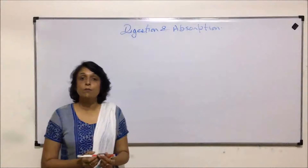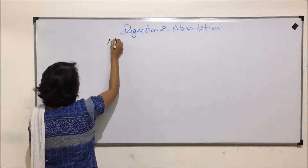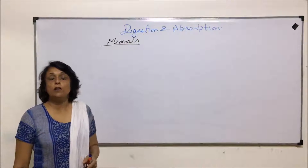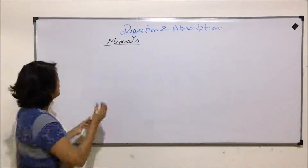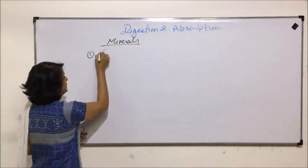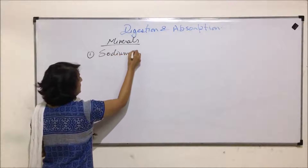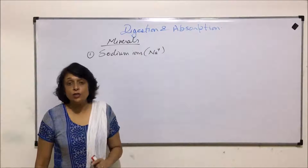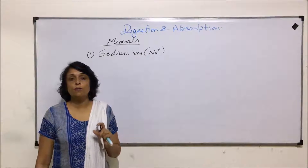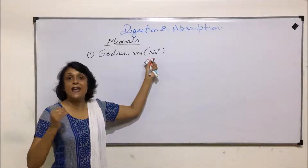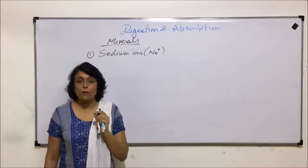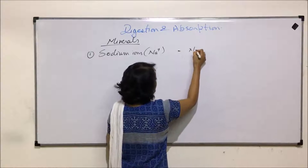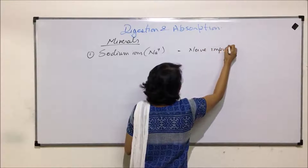We will now discuss the important minerals needed by our body and understand the significant roles they play. First, we need sodium ions. These sodium ions are essential for nerve impulse conduction in sodium-potassium pumps. The sodium ions pumped out are responsible for maintaining the membrane from outside as electropositive, so one important function is in nerve impulse conduction.